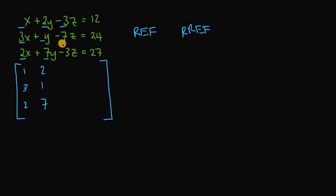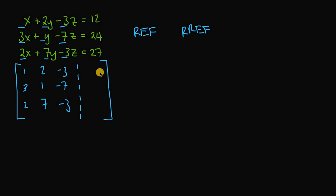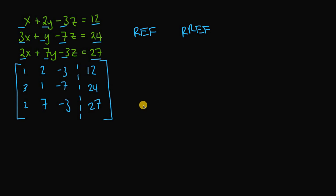In our third column we have negative 3, negative 7, and negative 3. I'm going to draw in this dashed line to separate the coefficients from the constants. On our final column we have 12, 24, and 27. That is our augmented matrix — the matrix where we're going to be performing our elementary row operations to get into reduced row echelon form.